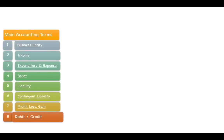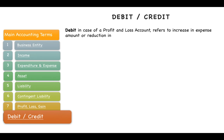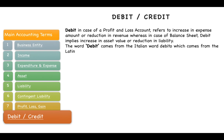The next important term is debit and credit. In a profit and loss account, debit refers to an increase in expense or a reduction in revenue. In a balance sheet, debit implies an increase in asset value or a reduction in liability. The word debit comes from the Italian word 'debito,' which itself comes from the Latin 'debita' or 'debio.'